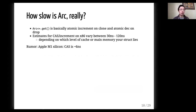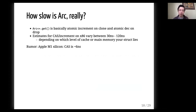How slow is Arc really? If the data is anything concise, it is fast — it is almost always faster than cloning. Arc is just an atomic increment on clone and an atomic decrement on drop. On x86, this is estimated at between 30 and 120 nanoseconds depending on which level of cache, and may be faster on other hardware.